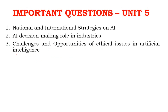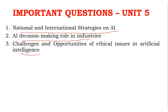For Unit 5, the most important topics are: national and international strategy on AI, AI decision making in industries, general challenges and opportunities in artificial intelligence, and ethical issues in artificial intelligence. This is the easiest subject with more than enough choice in answers.